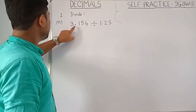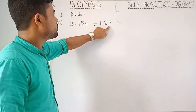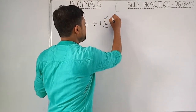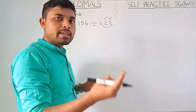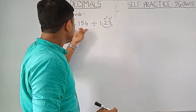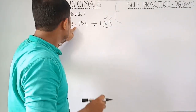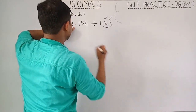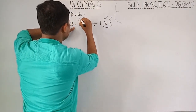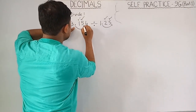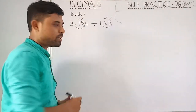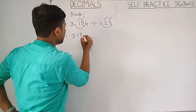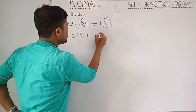Question N: 3.154 divided by 1.25. First move the decimal point - how many decimal places? 1, 2 - two decimal places. So we have to shift the decimal point for the dividend two places to the right side. The dividend 3.154 has one digit before the decimal, two after, so it becomes 315.4 divided by 125.